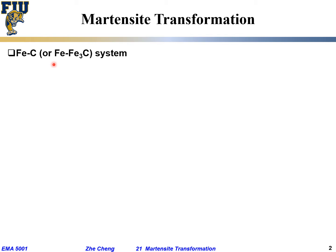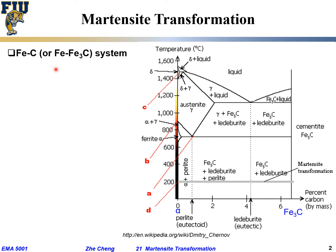The iron-carbon system is sometimes called the iron-cementite system, Fe3C. On the right side we have a part of a binary phase diagram — sometimes called a pseudo-binary phase diagram. On the left side is almost pure iron, and on the right side is cementite, which is Fe3C. It is called a pseudo-binary phase diagram because the right side is not pure carbon but iron-cementite.